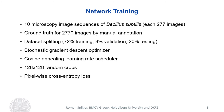Our dataset consists of 10 temporal microscopy image sequences of Bacillus subtilis, each comprising 277 images. Ground truth for all 2770 images was obtained by manual annotation. The dataset is split into 72% for training, 8% for validation, and 20% for testing. We train the networks using the standard Stochastic Gradient Descent optimizer with a momentum of 0.9 and a batch size of 4. The learning rate is initially set to 0.01 and cosine annealing is used to adjust the learning rate after each batch. We use 128 by 128 random crops for network training, and pixel-wise cross-entropy is employed as the loss function.